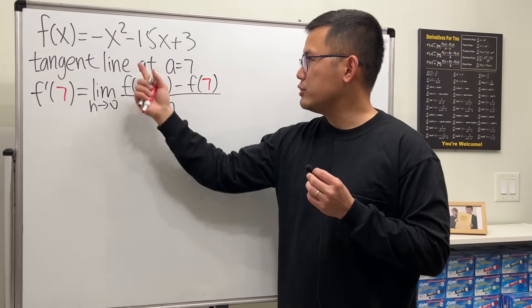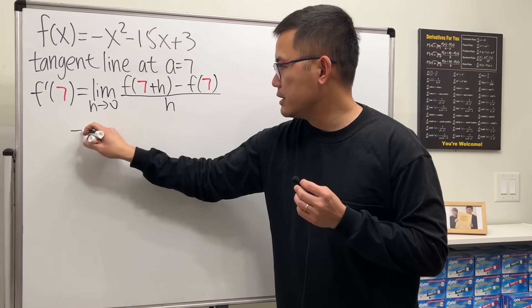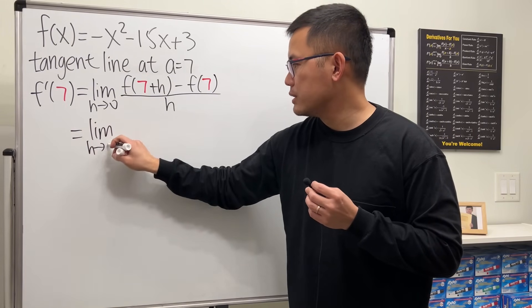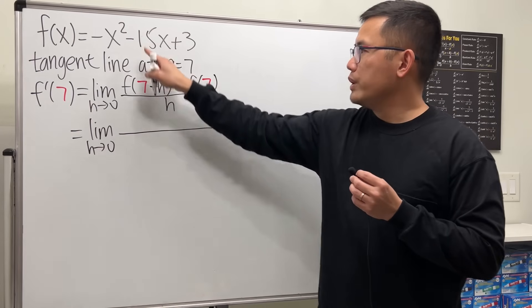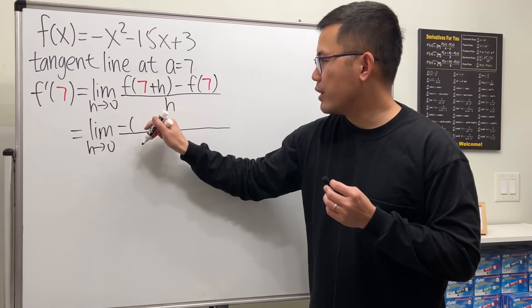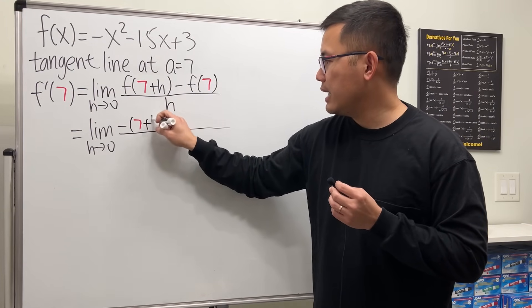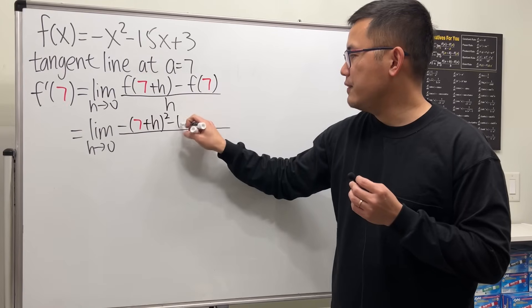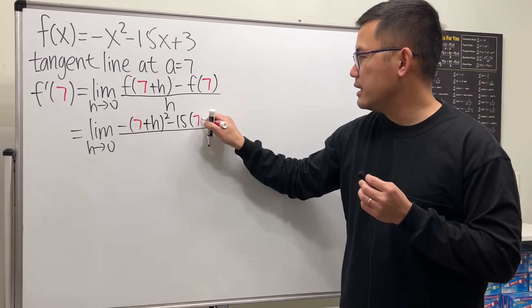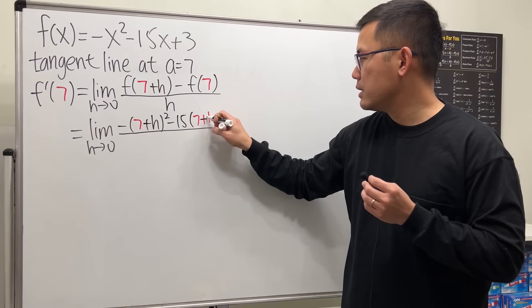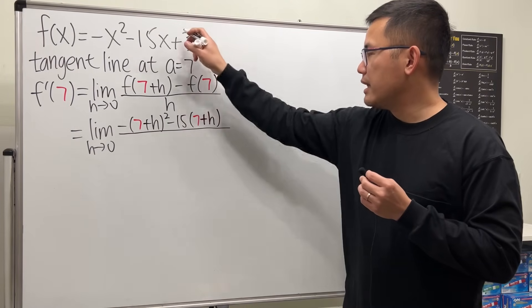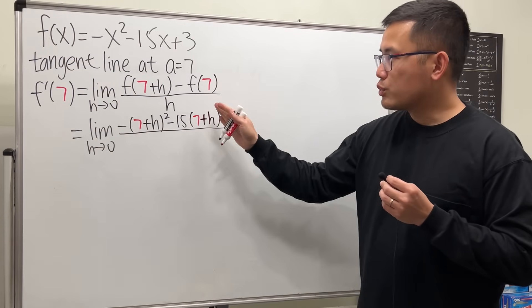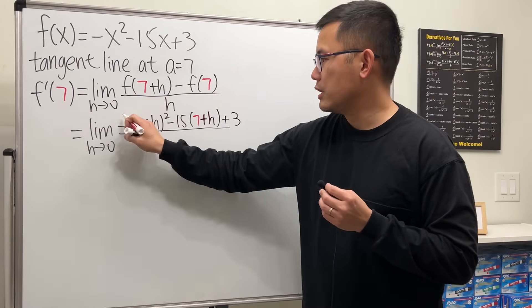From here we're just going to do the algebra. First, put (7 + h) into all the x's. So this is: limit as h approaches 0 of negative times (7 + h) squared, minus 15 times (7 + h), and then lastly plus 3. This right here is just the first part.